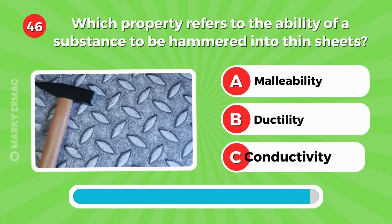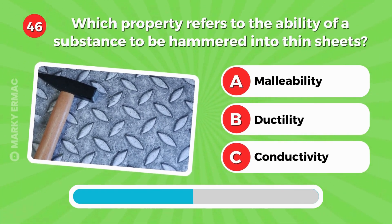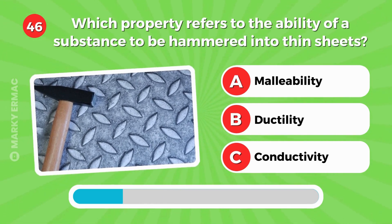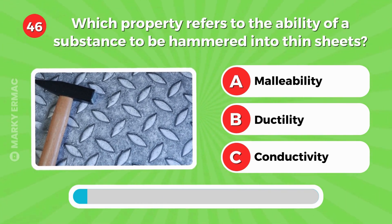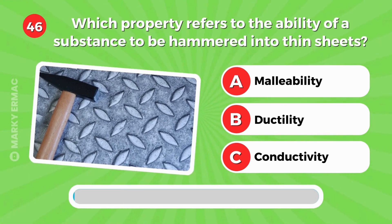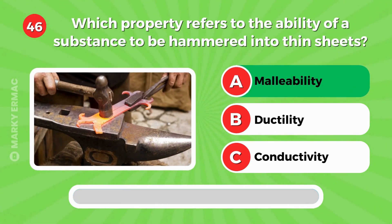Which property refers to the ability of a substance to be hammered into thin sheets? Malleability, ductility, or conductivity? Letter A — malleability.